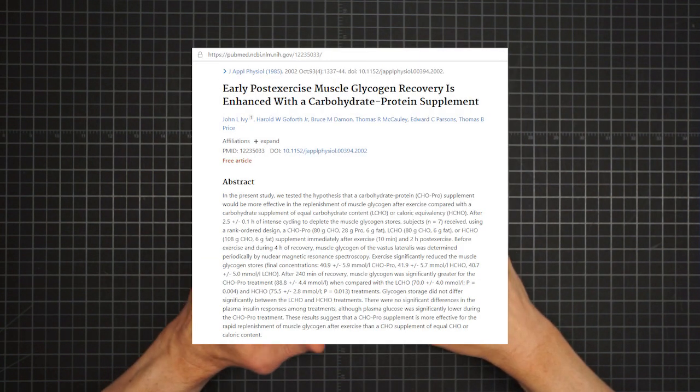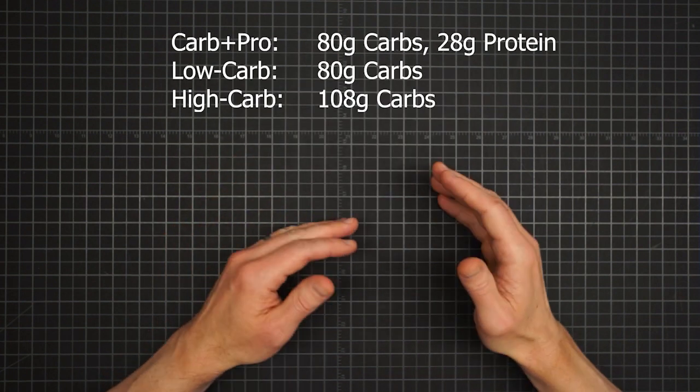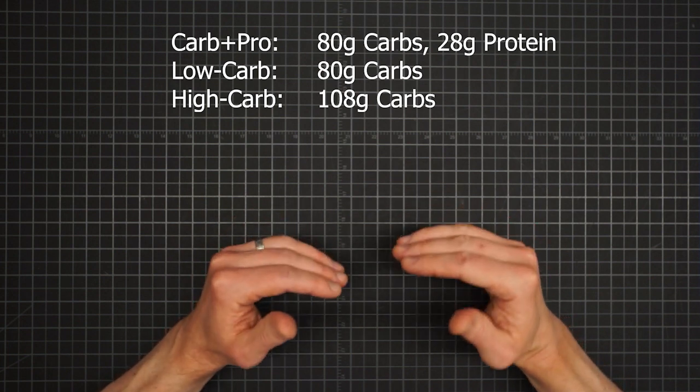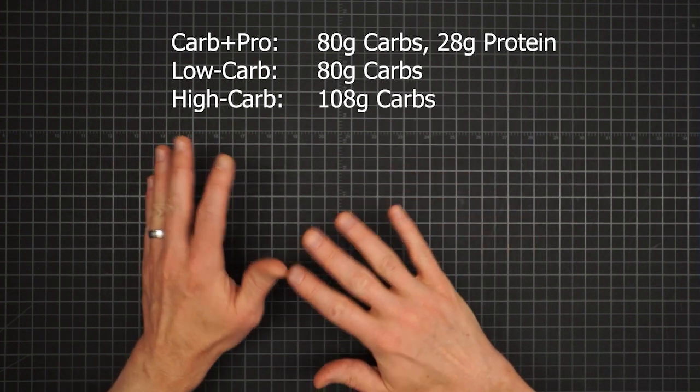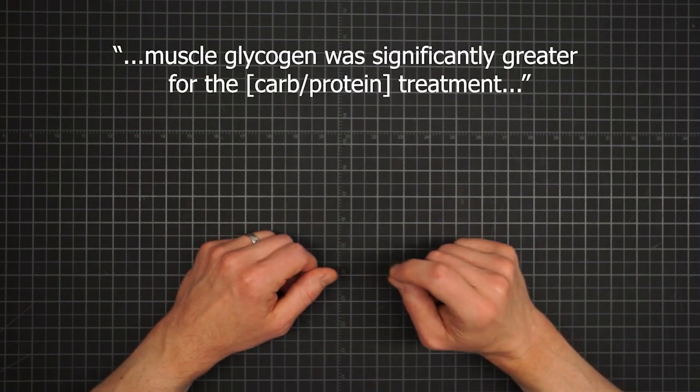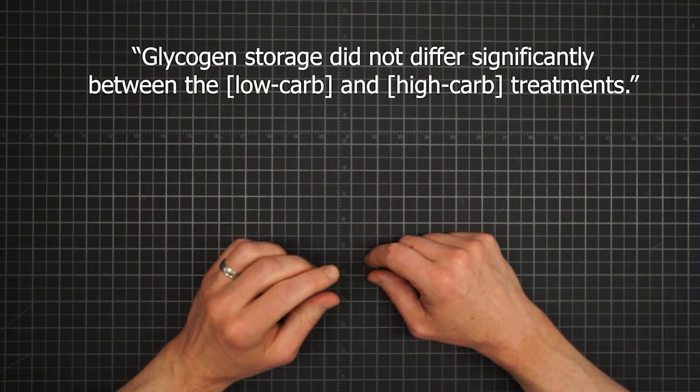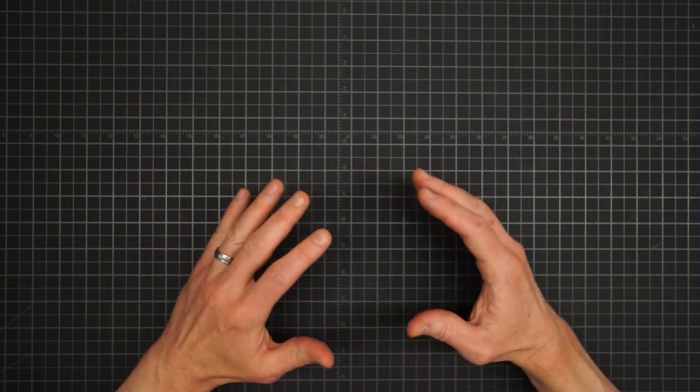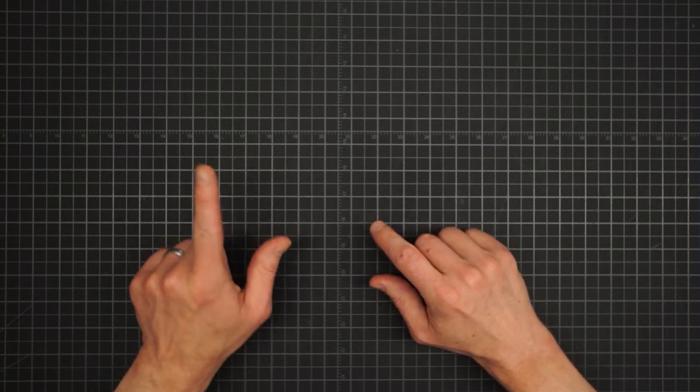And in another study, they tested even further just to make sure. This time, they gave their subjects either a carb-protein mix, a carb-only solution of the same exact amount of carbs but without the protein, or a carb-only option that had a higher number of grams carbs such that its total calorie content matched that of the carb-protein combo. After four hours of recovery, muscle glycogen was significantly greater for the carb-protein treatment than either of the other two, including the high-carb option with matching calories. Also, they found no statistically significant difference between the high and low-carb-only options. In other words, just increasing the size of a snack won't help you restore more glycogen.